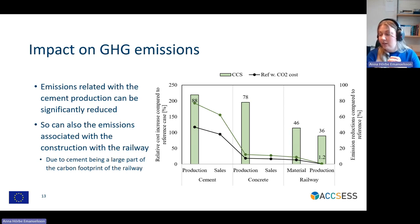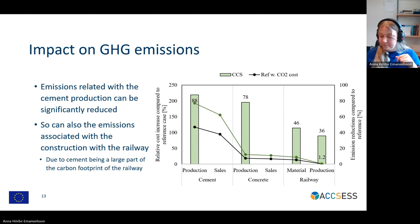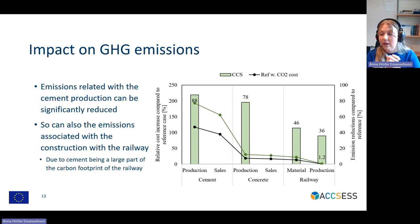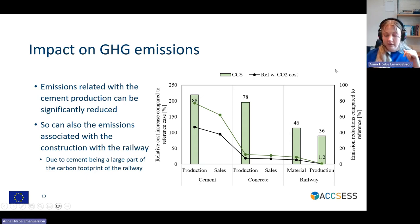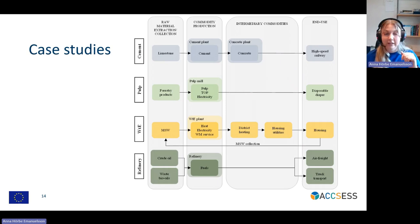A 36% emission reduction with only an additional cost increase of about 1% is quite a significant result. This is largely due to cement being a large part of the carbon footprint of the railway, but at quite a small cost. Now, having gone through the cement case study quite thoroughly, I will bring up the overview figure of all the case studies.